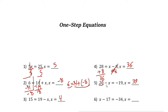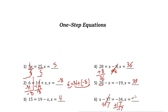Next: x minus 17 = negative 34. We have subtraction, so the inverse operation is addition. Add 17 to both sides. Negative 34 plus 17 is negative 17, and x minus 17 plus 17 cancels out, so x = negative 17. Checking: negative 17 minus 17 equals negative 34. Correct.